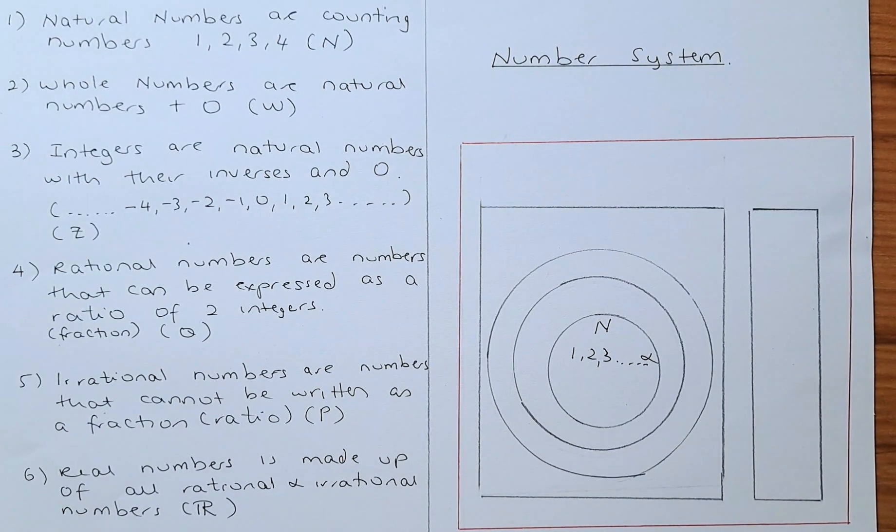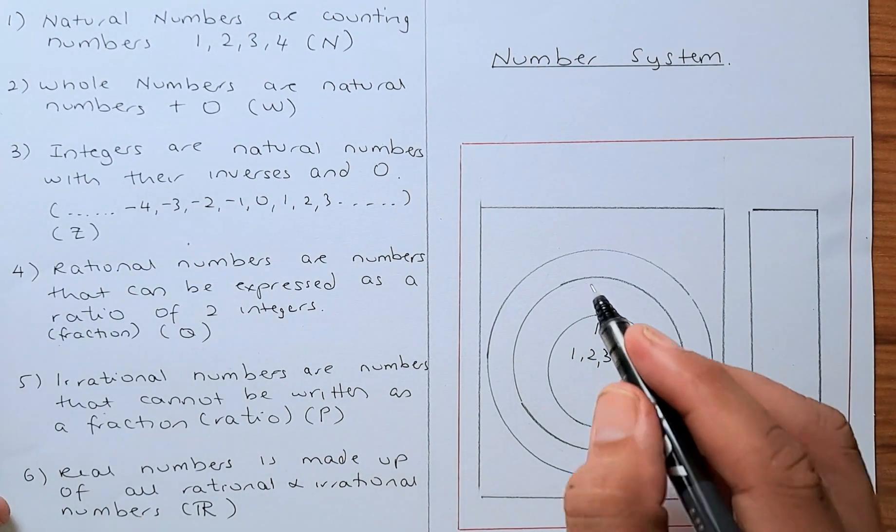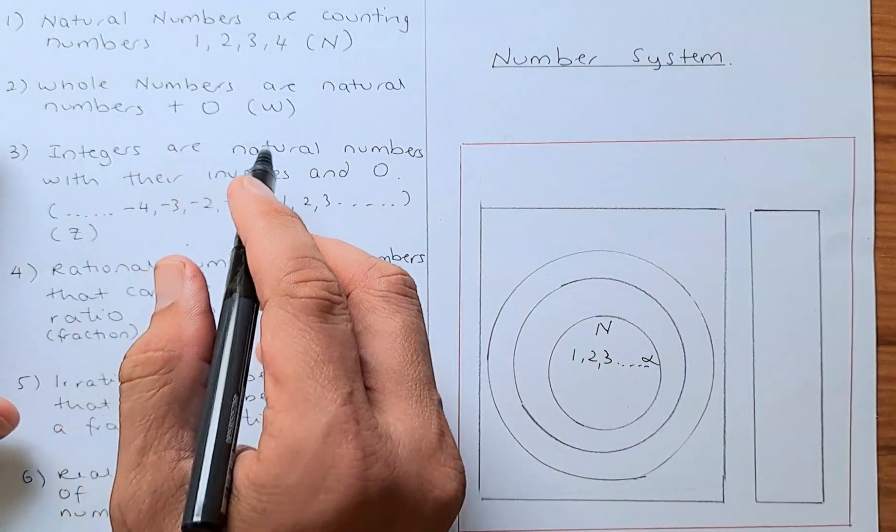The next numbers are whole numbers. They are natural numbers plus zero, and they are represented by the letter W.